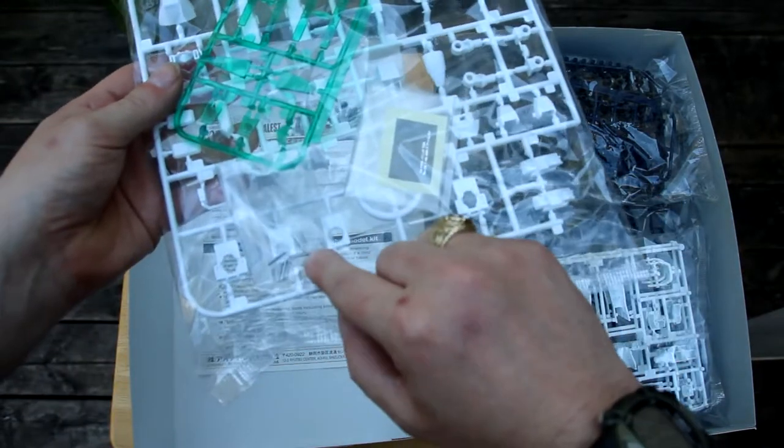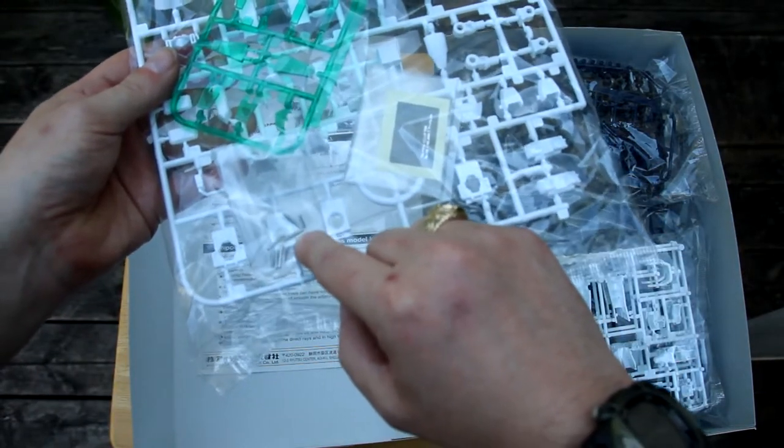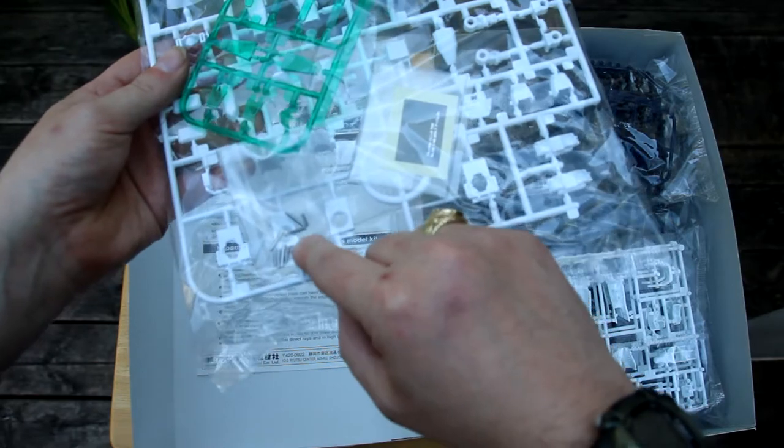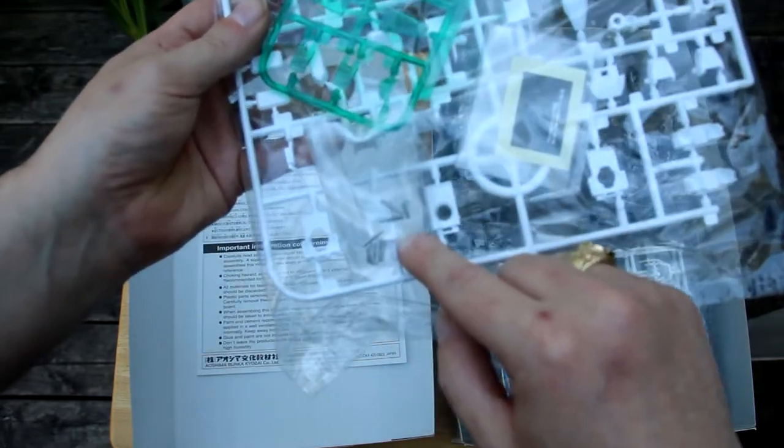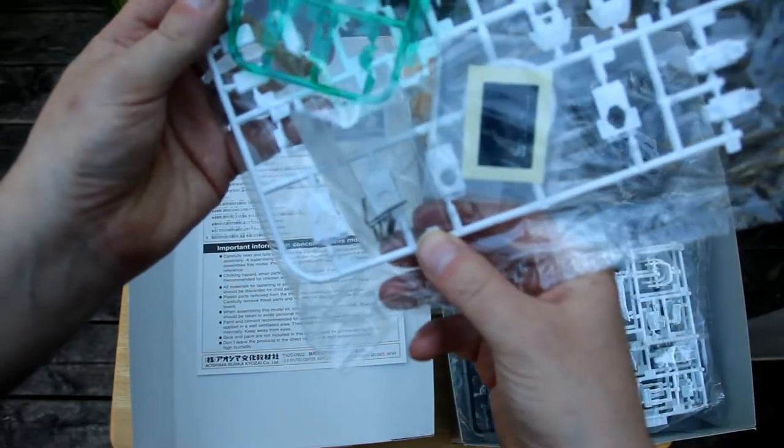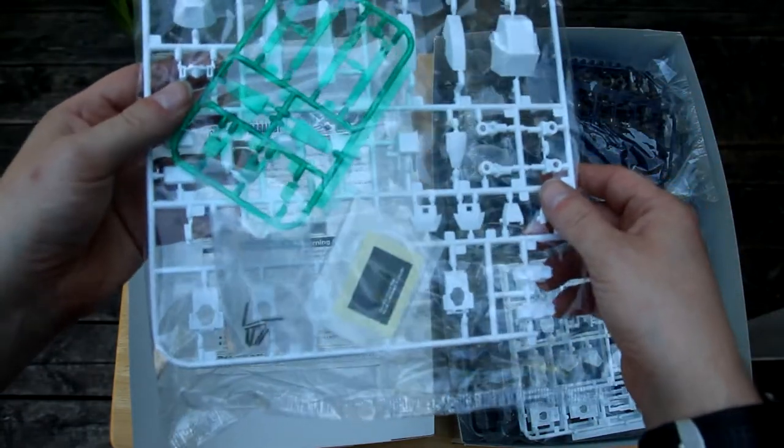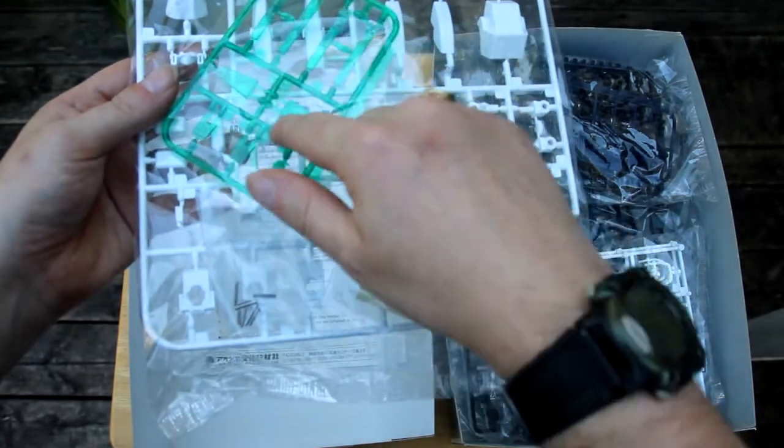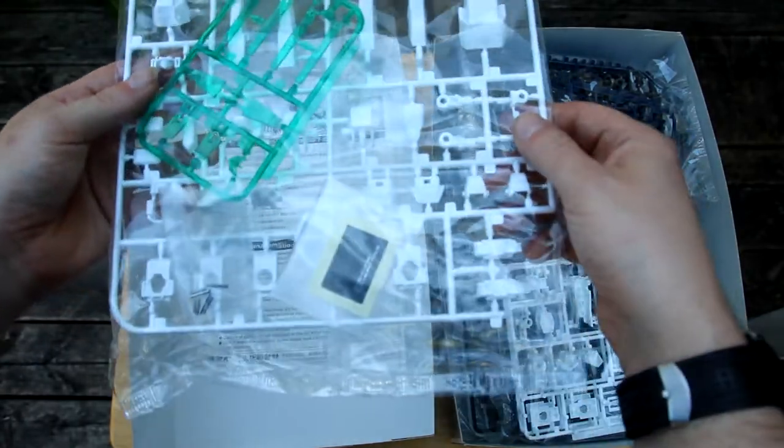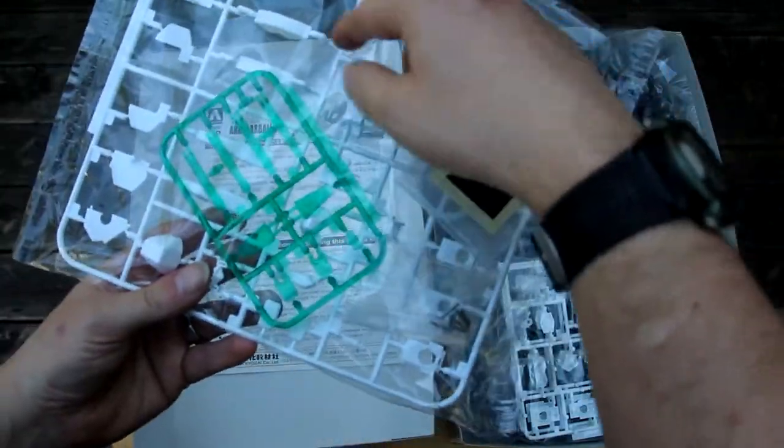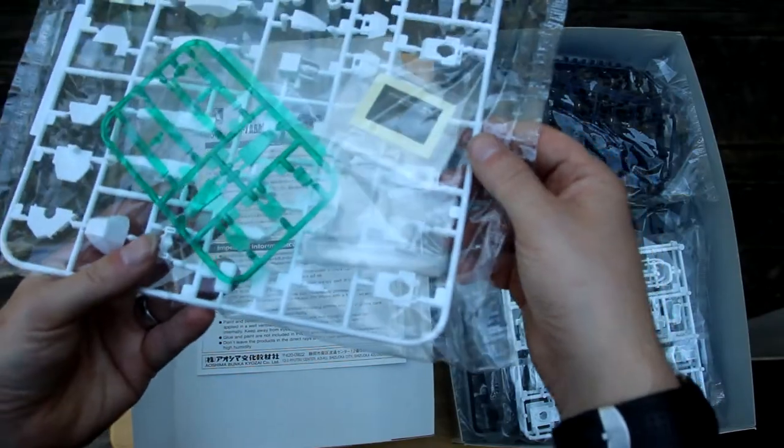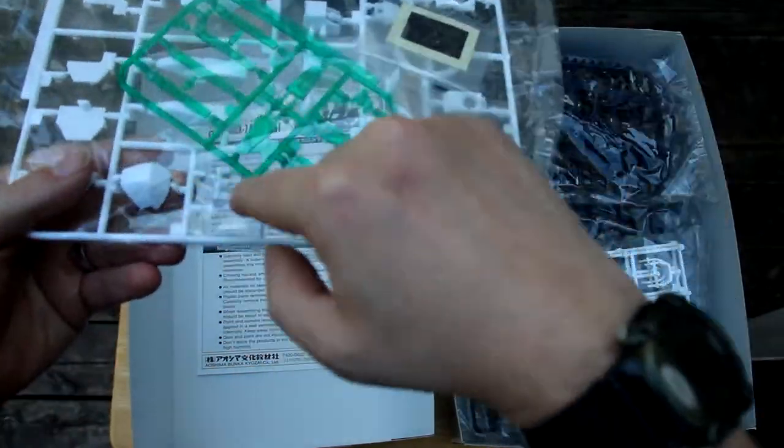And then we've got, I guess those are like screws or pistons. Decal for around the eyes. I'm not sure what these are for. Now we've got more armor, looks like part of the head.